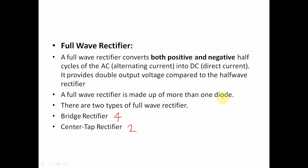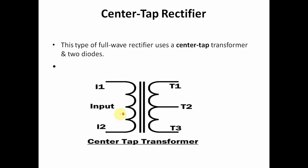A full wave rectifier is made up of more than one diode. In a full wave rectifier, there are two or four diodes present — in center tap rectifier, two diodes are present, and in bridge rectifier, four diodes are present.